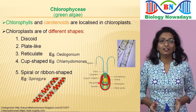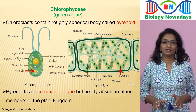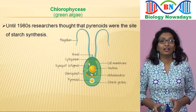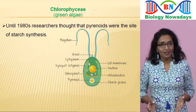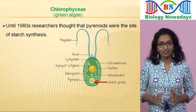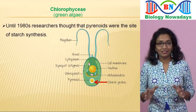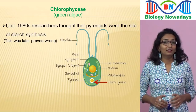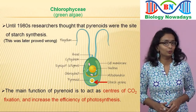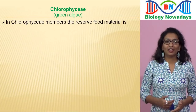The chloroplast also contains a roughly spherical body called the pyrenoid. Pyrenoids are common in algae but nearly absent in other members of the plant kingdom. Until the 1980s, researchers thought pyrenoids were the site of starch synthesis, because under the microscope the pyrenoids are often enclosed by a starch sheath. But based on many experiments, researchers understood that pyrenoids are not the site of starch synthesis. Now it is found that the main function of pyrenoids is to act as centres of carbon dioxide fixation and thereby increase the efficiency of photosynthesis. The carbohydrates produced through photosynthesis are stored as starch around the pyrenoids.